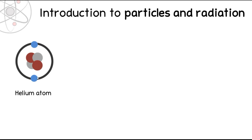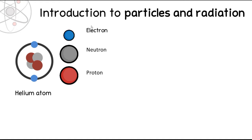Here we've got a diagram of a helium atom. We've got some electrons out here, which are blue. We've got some protons, which are red, and we've got some neutrons, which are grey. These are called subatomic particles because they are subatomic - they're smaller than the atom, they're inside the atom.